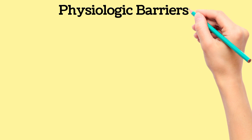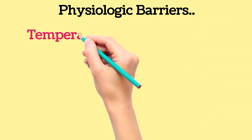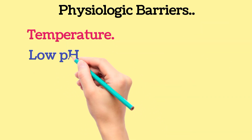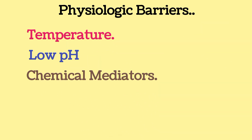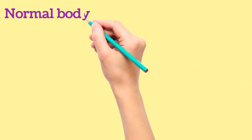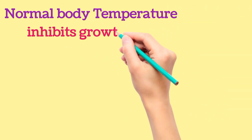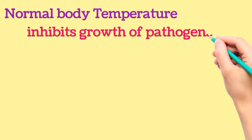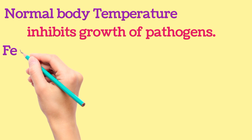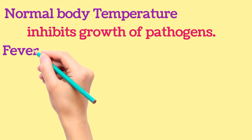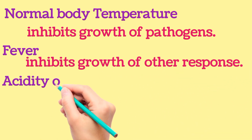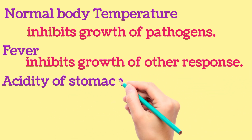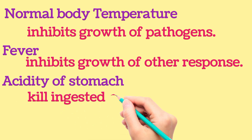Physiologic barriers include temperature, low pH, and chemical mediators. Normal body temperature inhibits growth of some pathogens. Fever response also inhibits growth of some pathogens.